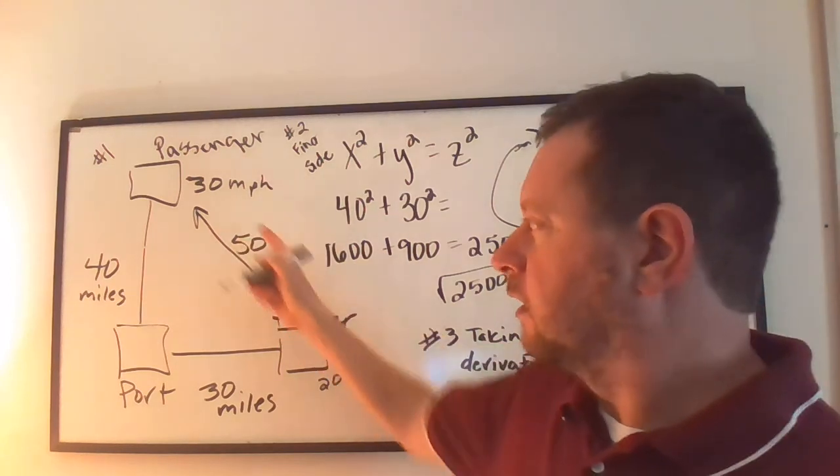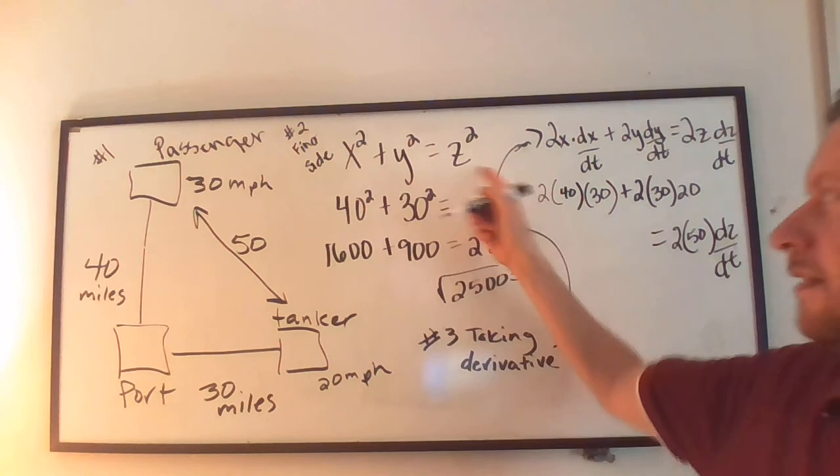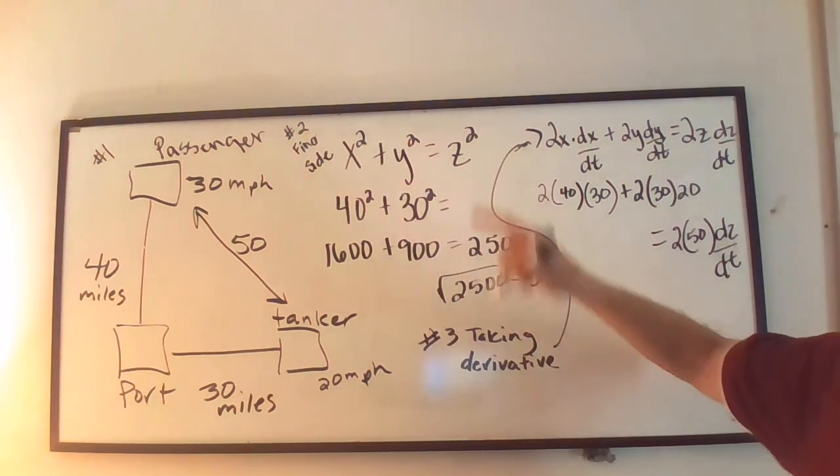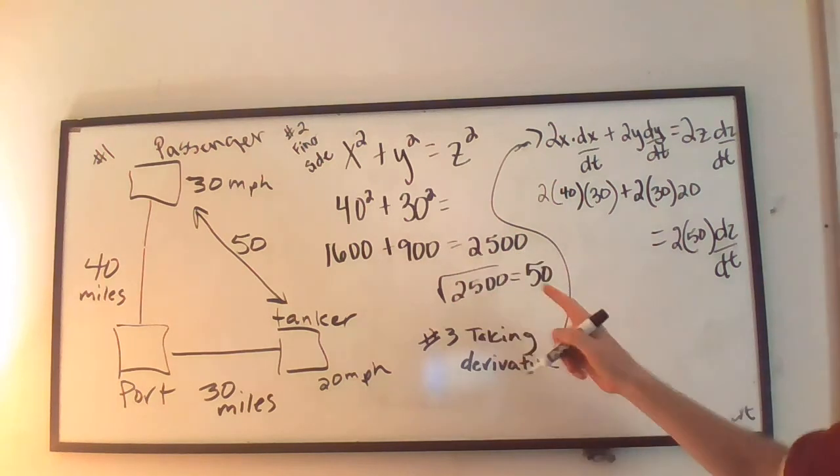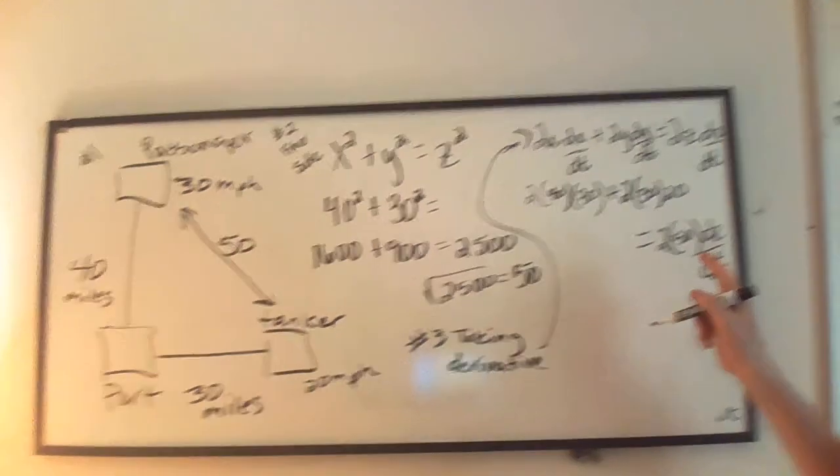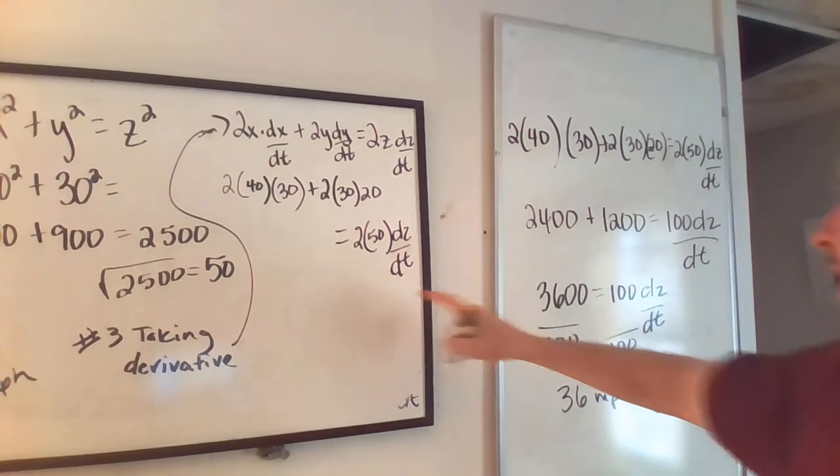But then we're actually looking to find what is the speed. So we set up this, found everything, found the constant part, and then found through all this wonderful math here, dz/dt.